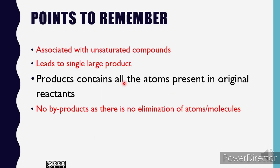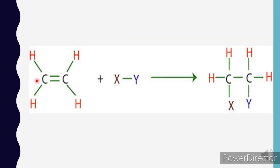Third point is that you should see that the formed product must contain all the atoms of the original reactant. In earlier example, we have seen that the product here contains all the atoms of the reactant. That is two carbon atoms, XY, and four hydrogens.